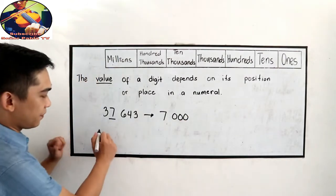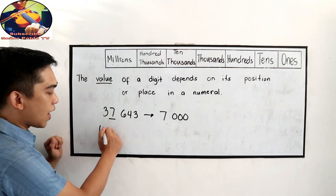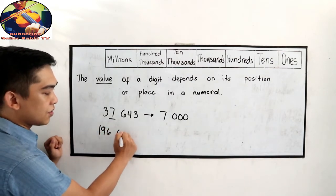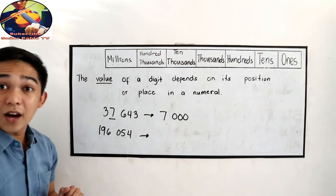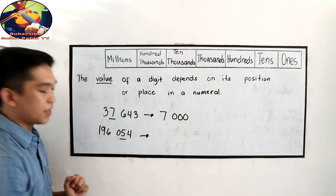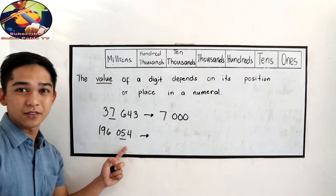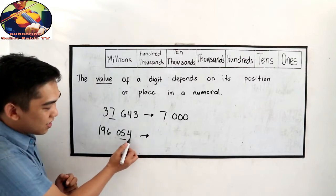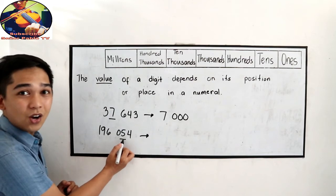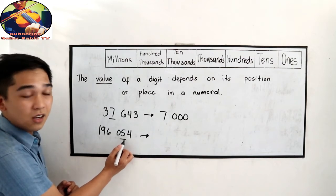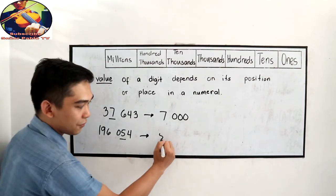Next, let's try another one. Let's say we have 196,054. What is the value of the underlined number? Let's say 5. So this is, the place value is ten. So it is in the tens place. So our value is 50.